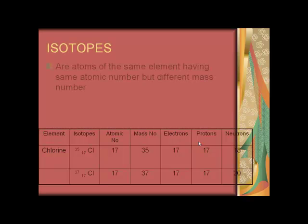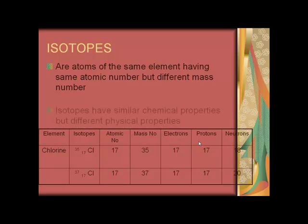Isotopes are atoms of the same element having the same atomic number but different mass number. Isotopes have similar chemical properties but different physical properties.